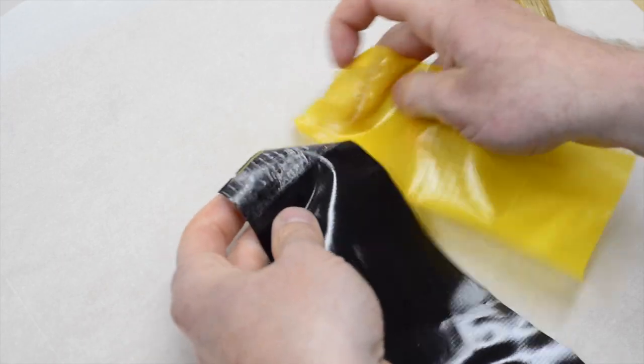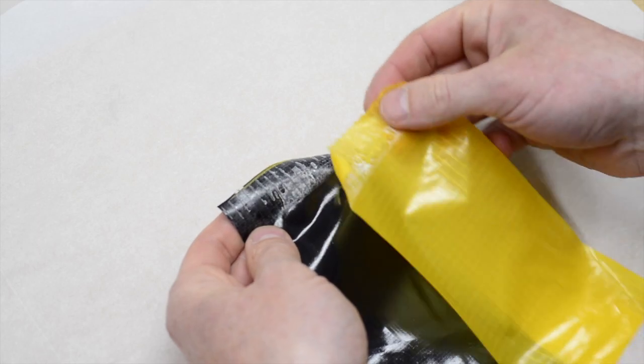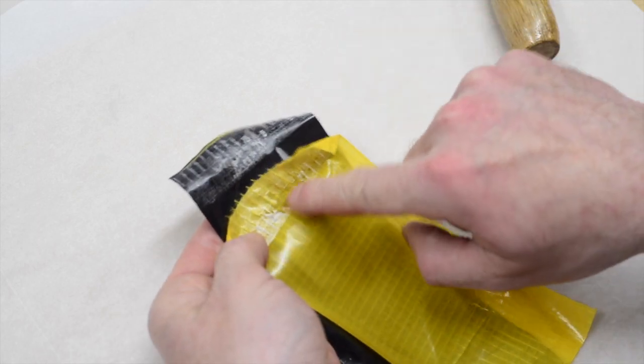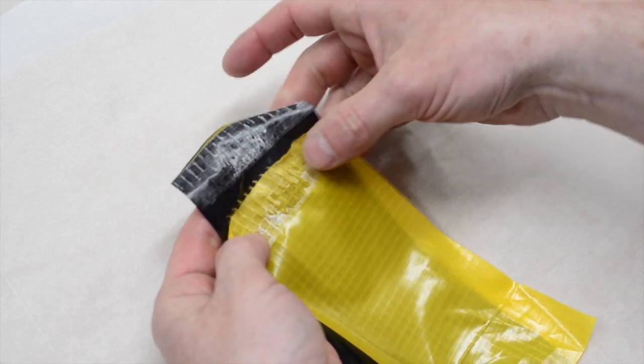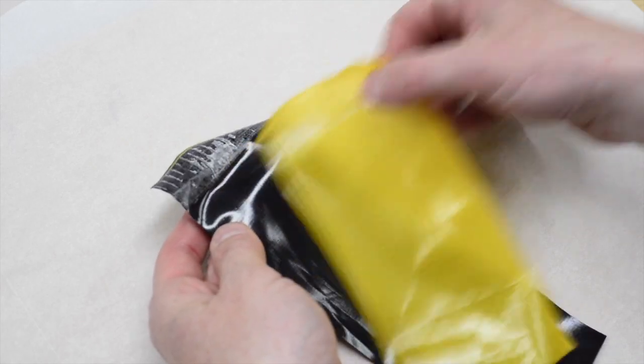This is a decent weld, especially in the middle. You can see that the TPU from both fabrics has welded together to form a single cohesive layer that peels away from the woven fabric in patches. I probably should have ironed it a little bit longer on the sides.